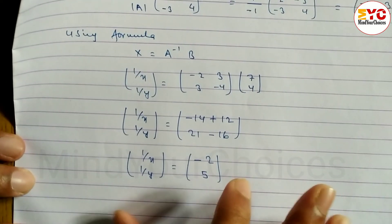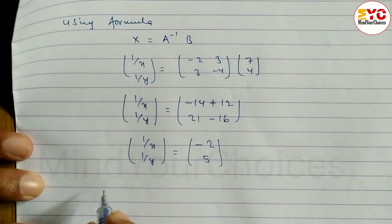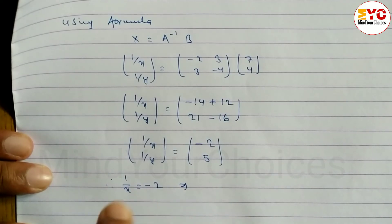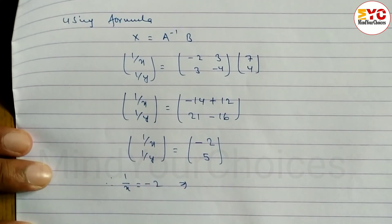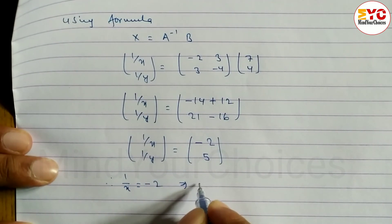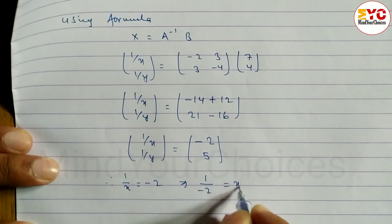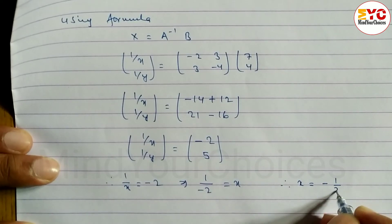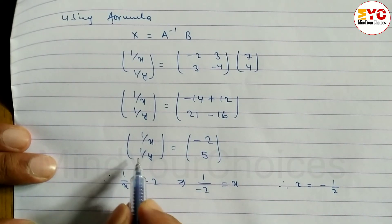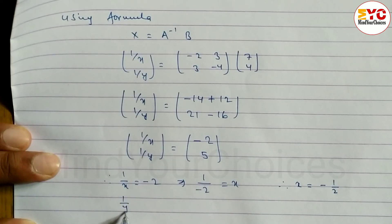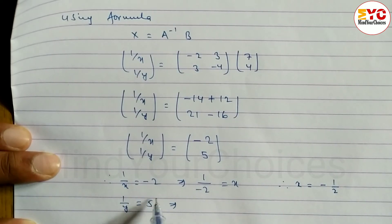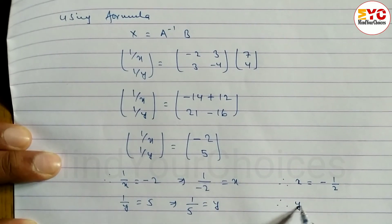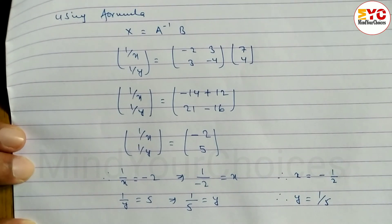Now we find the values of x and y. Since 1/x = −2, we get x = 1/(−2) = −1/2. Therefore x = −1/2 is your answer. Next, since 1/y = 5, we interchange to get y = 1/5. Therefore y = 1/5 is your answer.